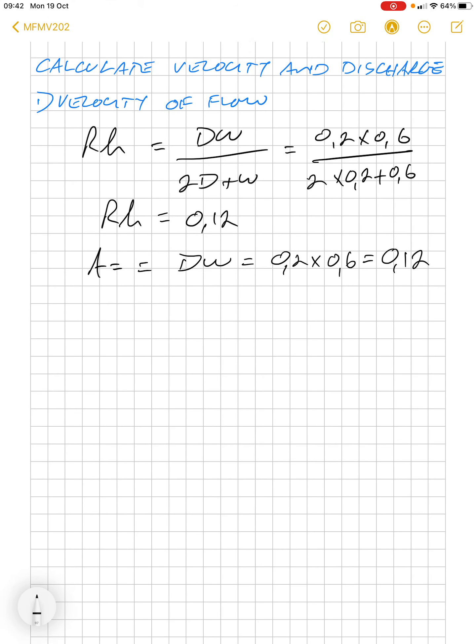Let's use the Manning formula because they give us the constant n. V equals the hydraulic mean radius to the power of two-thirds divided by n times the square root of i. So substituting...